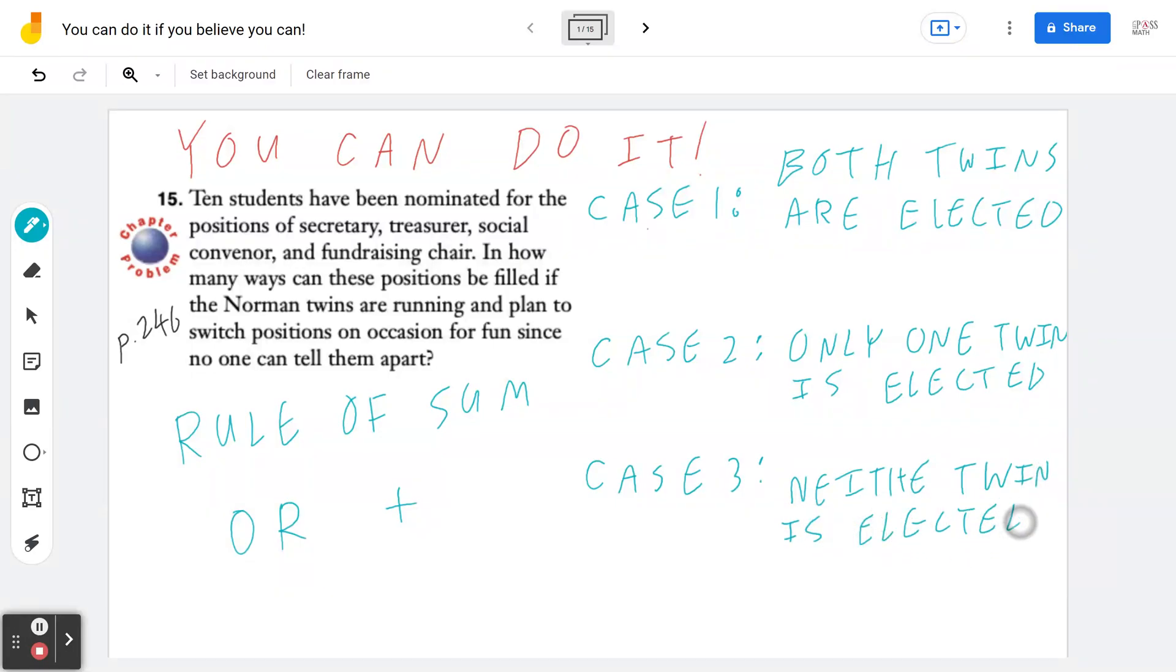I hope this makes sense because it covers every case possible. If you add case one, two, and three, this will give you the answer that you're expecting. Rule of sum is the thought process. So let's go back. Let's write down the numbers, each case starting with case one.